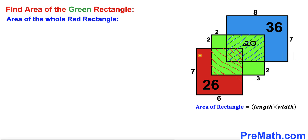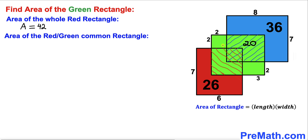Now let's focus on the whole red rectangle and calculate its area using the formula once again. Our length is 7 and width is 6, so the area of this red rectangle is 7 times 6, which is 42 square units. Then the area of the common part between the green and red rectangle is 42 minus 26, which equals 16 square units.